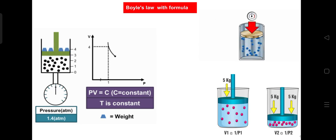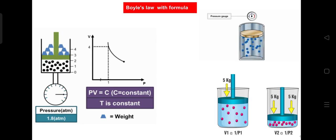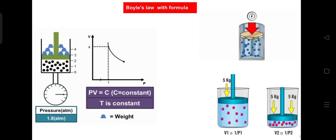Boyle's law can be expressed mathematically as P1V1 = P2V2, where P1 and V1 represent the initial pressure and volume, and P2 and V2 represent the final pressure and volume, respectively. This equation shows that the product of the initial pressure and volume equals the product of the final pressure and volume.